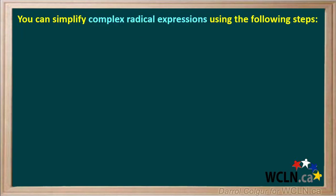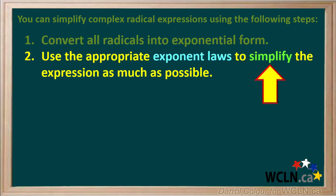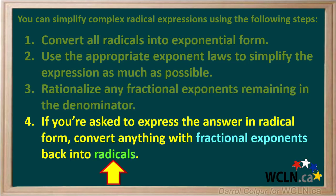In summary, these are the main steps to follow in simplifying more complex radical expressions. Start by converting any radicals into exponential form. Next, use the appropriate exponent laws to simplify the expression as much as possible. Check the denominator and see if it has any fractional exponents; if so, rationalize them. If you're asked to express the answer in radical form, convert anything with fractional exponents back into radicals. To get good at doing these, you need lots of practice.